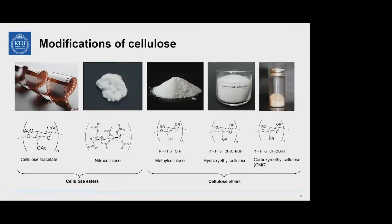Here I give some classic examples of cellulose modification. Through esterification, we can prepare cellulose triacetate, which is a film-forming agent also used in my project, and we can also prepare nitrocellulose. By etherification, we can prepare methylcellulose, hydroxylcellulose, and carboxymethylcellulose, which can be used in coating areas or as forming agents.